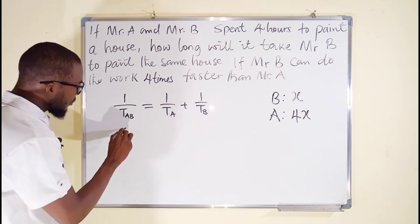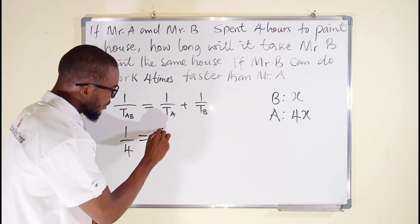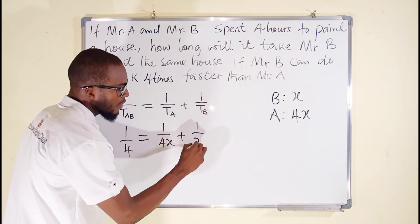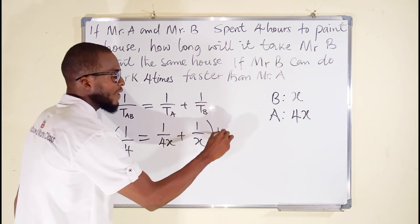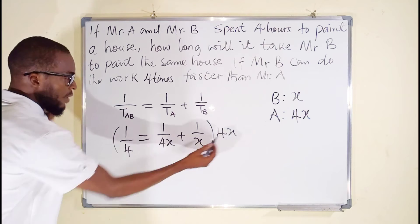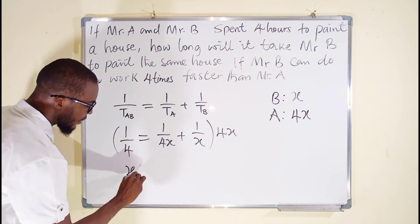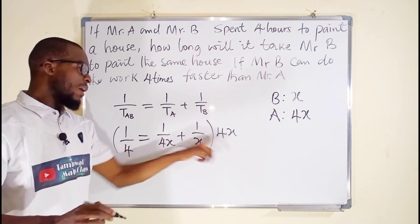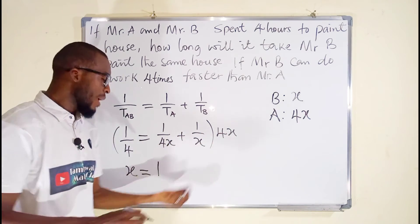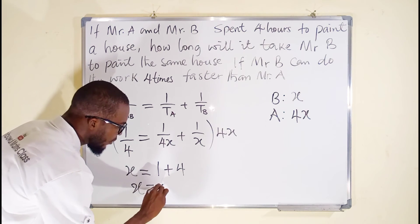So this is 1 over 4, because altogether they spent four hours, equal to 1 over 4x plus 1 over x. We can multiply all of them by the LCM, which is 4x. 4x times 1 is 4x divided by 4 equals x. 4x times 1 is 4x, divided by 4x is 1. 1 times 4x divided by x is just 4. So finally you can see that x equals 5, and this 5 is in hours.